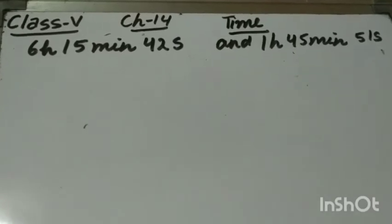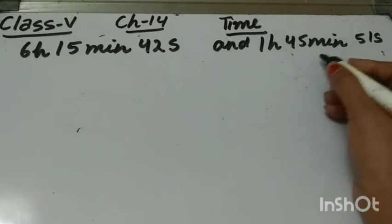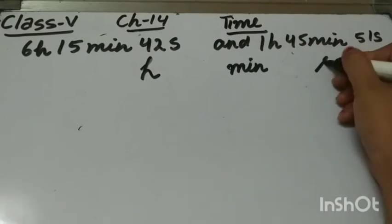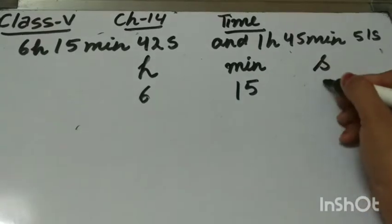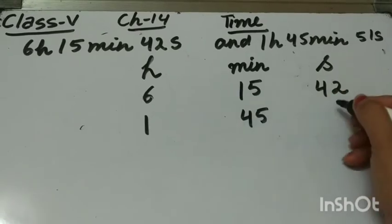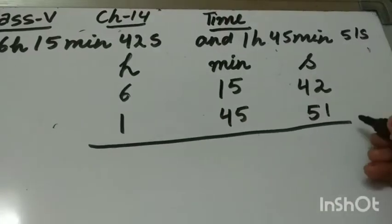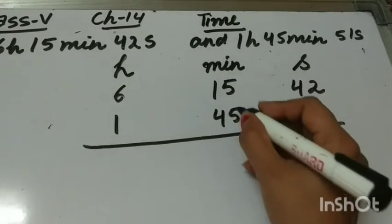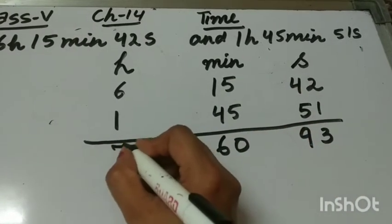Let's take one more example. We have to add 6 hours, 15 minutes, 42 seconds and 1 hour, 45 minutes, 51 seconds. First we write H, min and sec. Now 6 hours, 15 minutes and 42 seconds, and 1 hour, 45 minutes, 51 seconds. Adding separately: 2 plus 1 is 3, and 5 plus 4 is 9; then 5 plus 5 is 10, and 4 plus 1, 5 plus 1 is 6; and 6 plus 1 is 7.